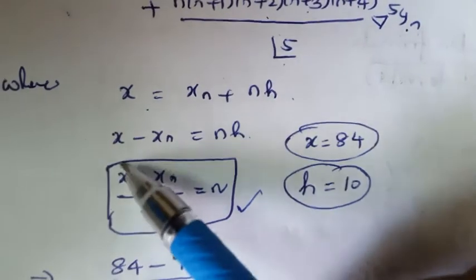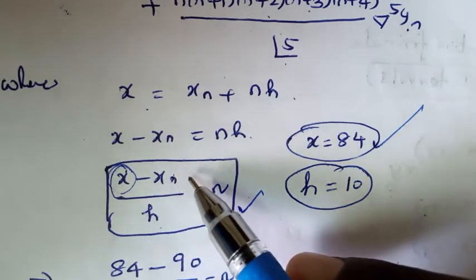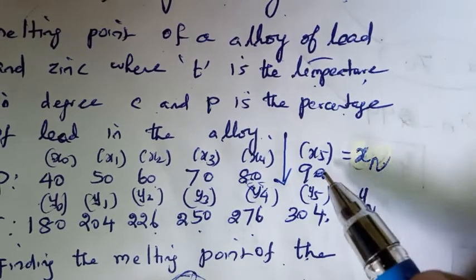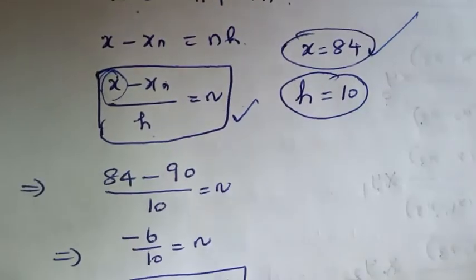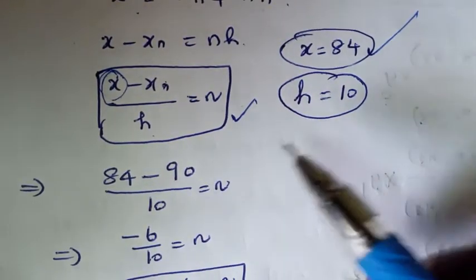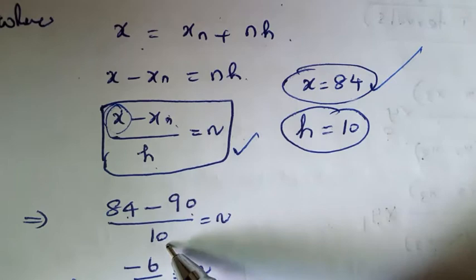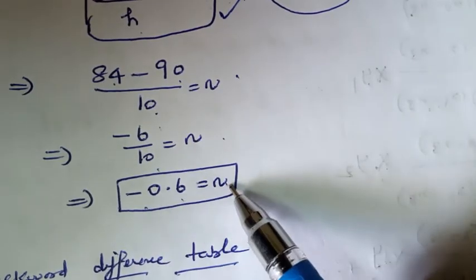The computation value x is 84. In the table, we take the last value as xₙ, which is 90. So n = (x − xₙ) / h = (84 − 90) / 10 = −6/10 = −0.6.